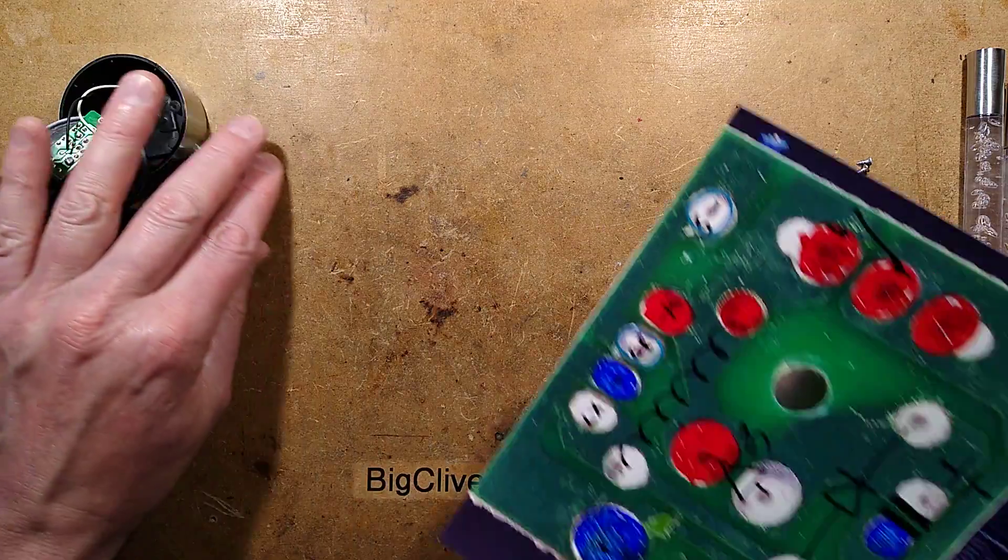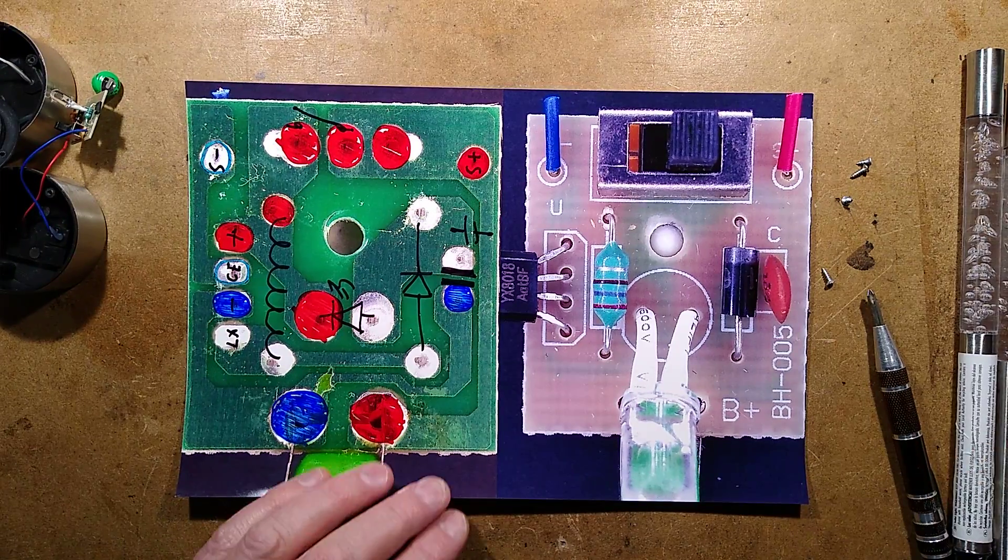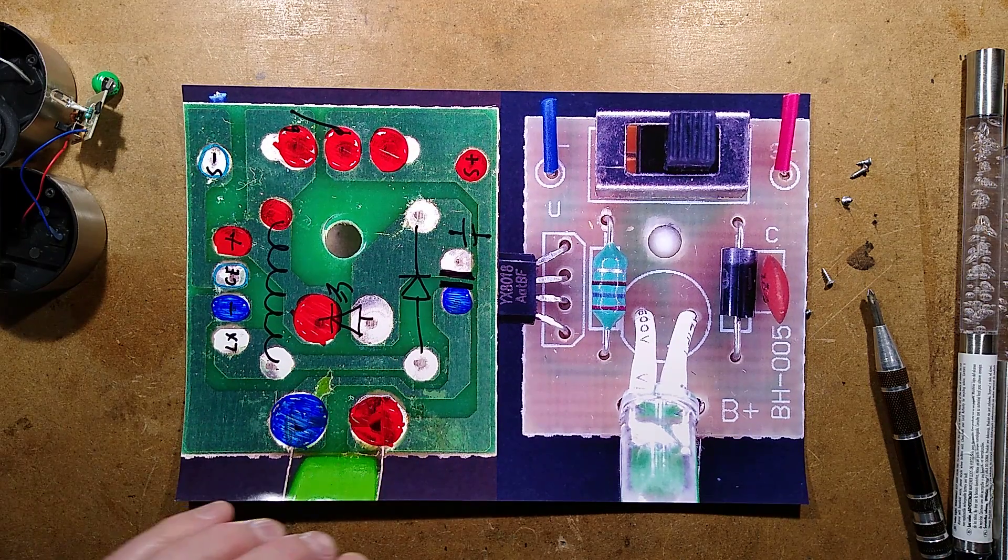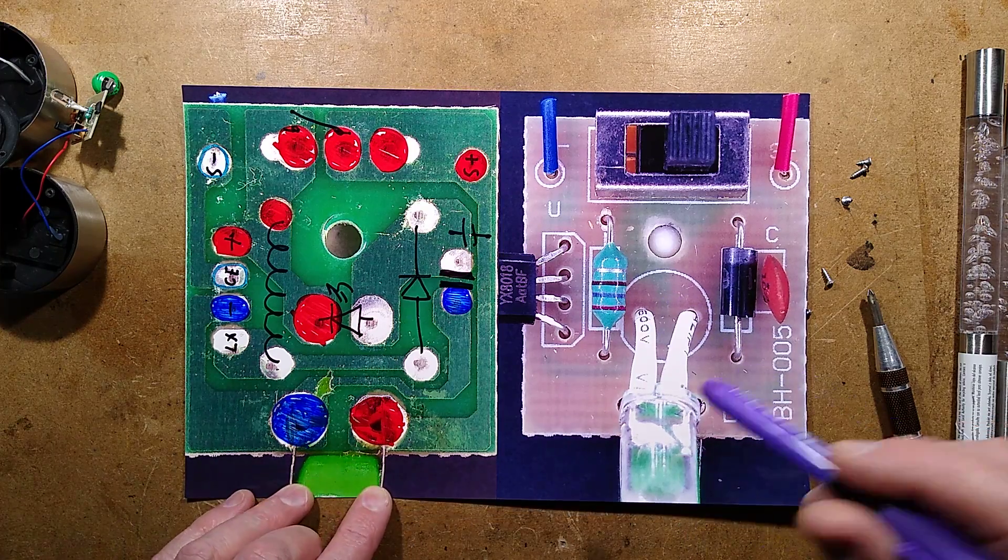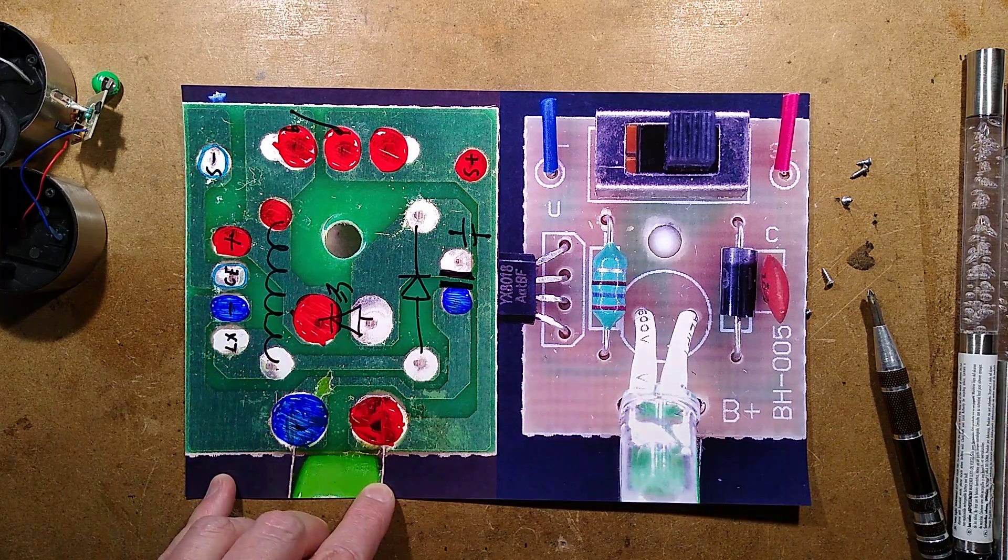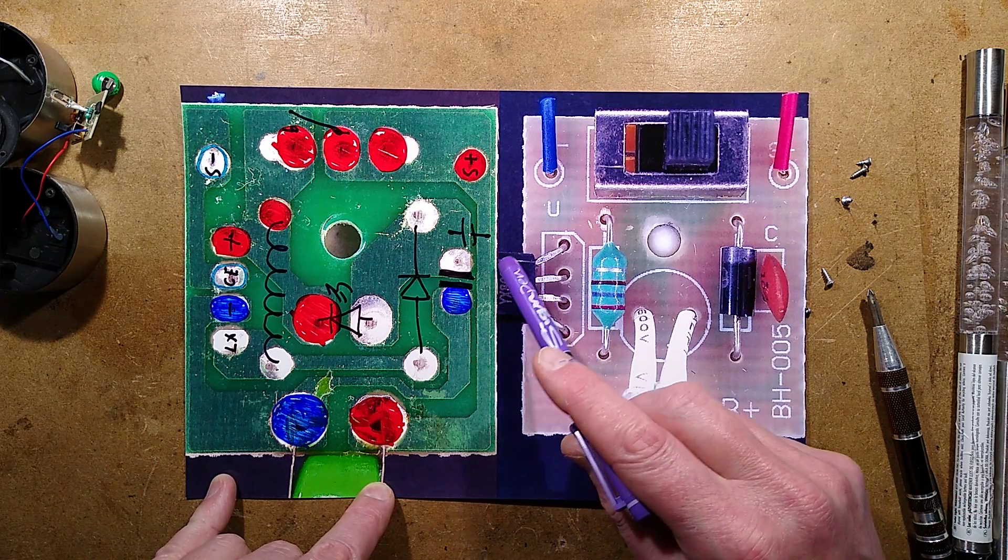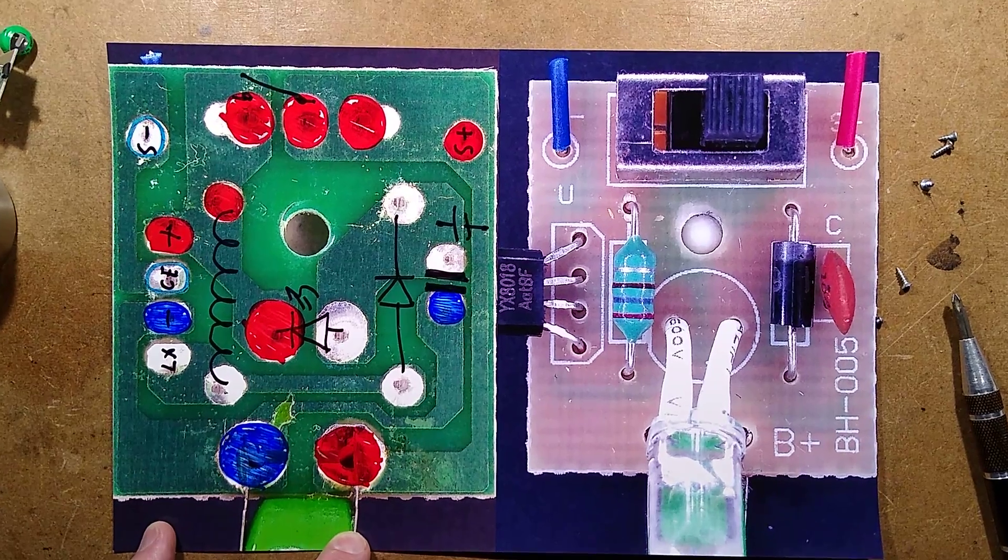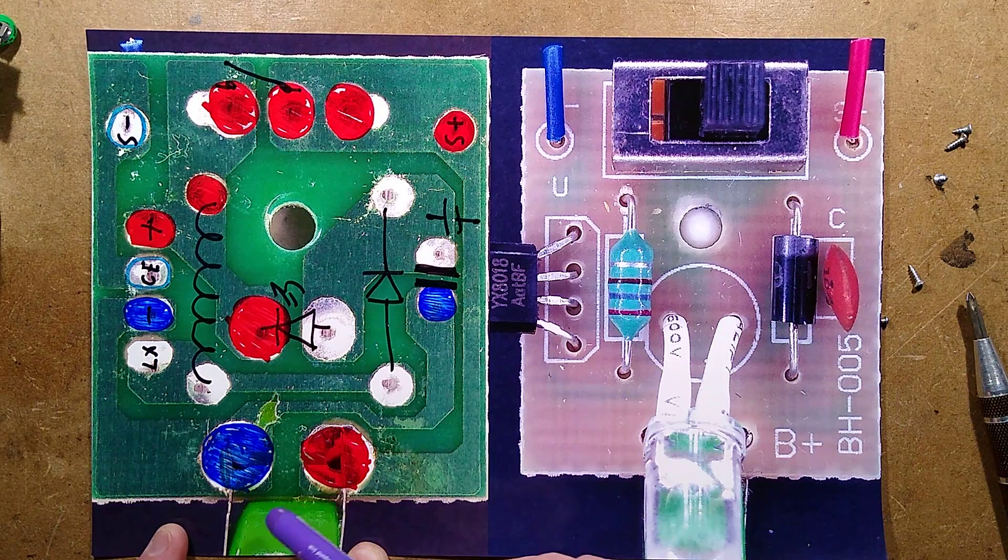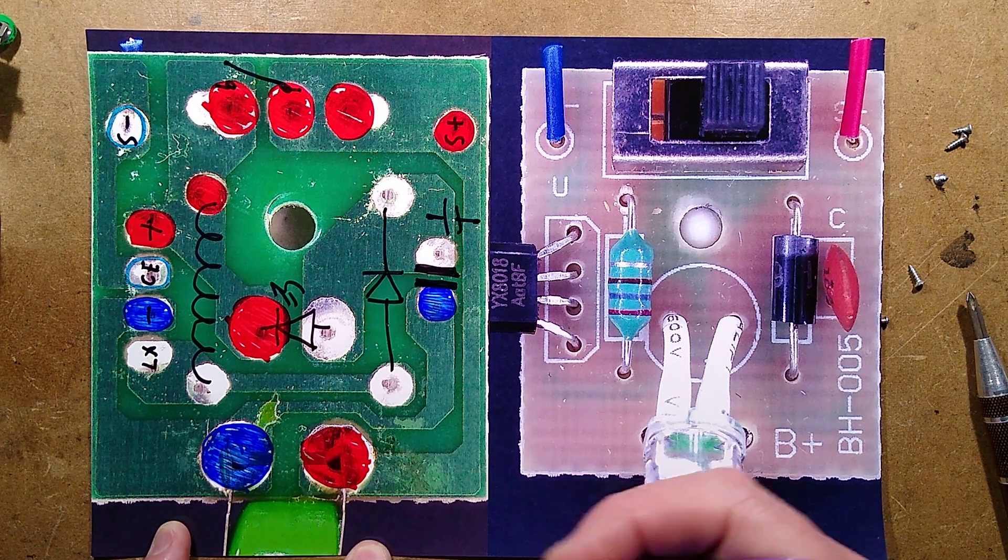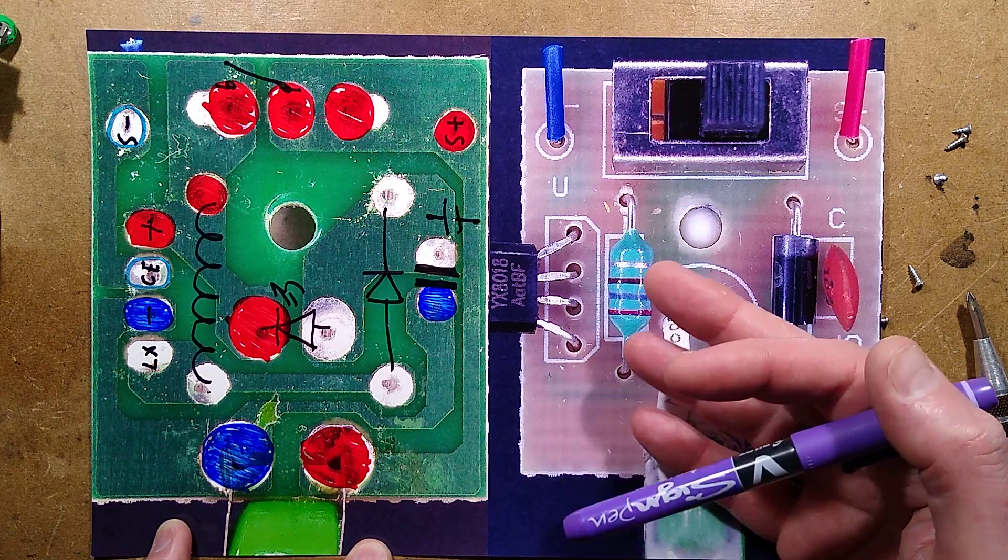I've already taken a picture of the circuit board. This has the usual arrangement with a little chip called a YX8018, a dedicated control chip for these standard solar lights. It acts as a rectifier between the solar panel and the button cell, and it senses the voltage from the solar cell to know when it's dark.